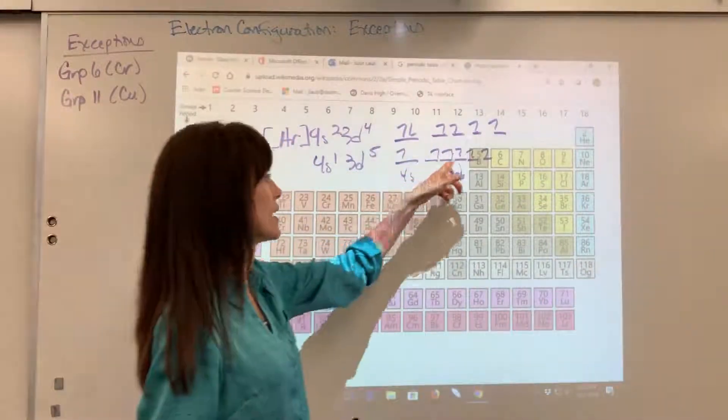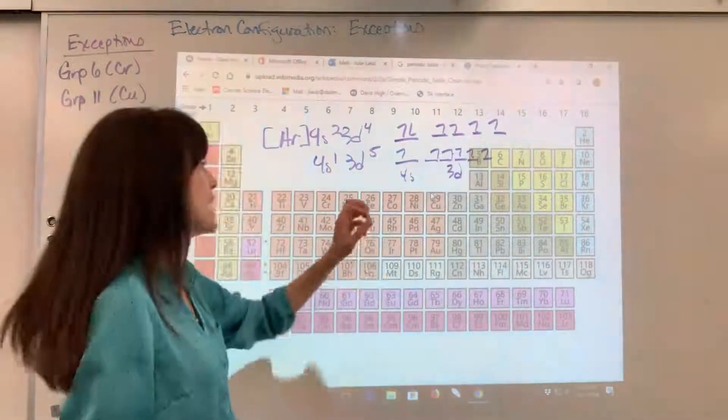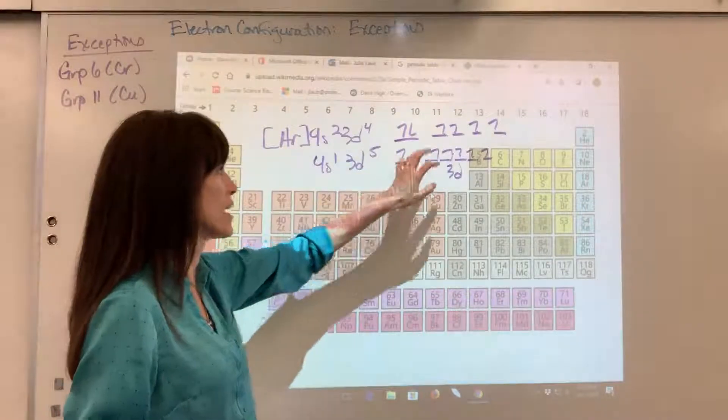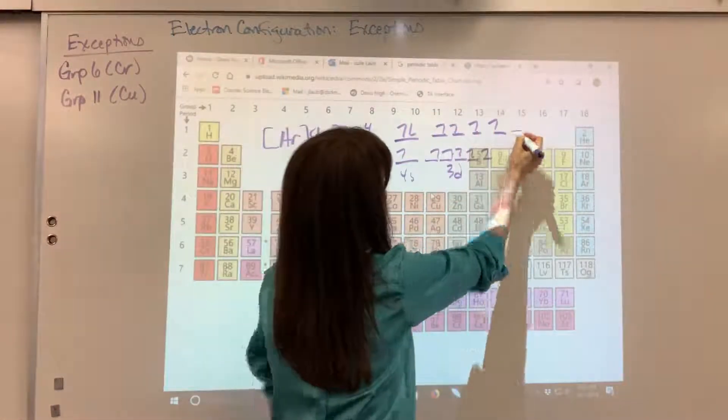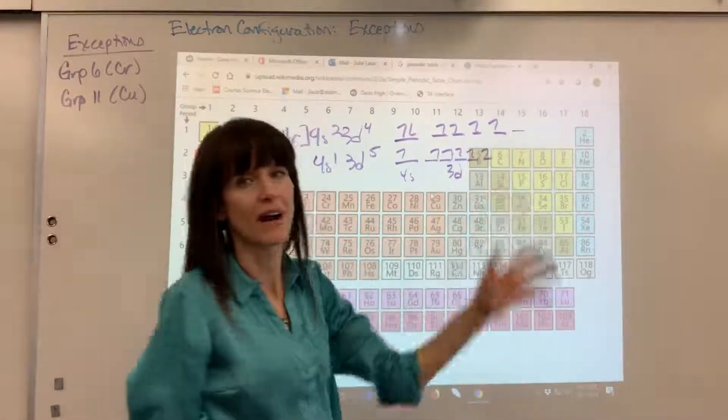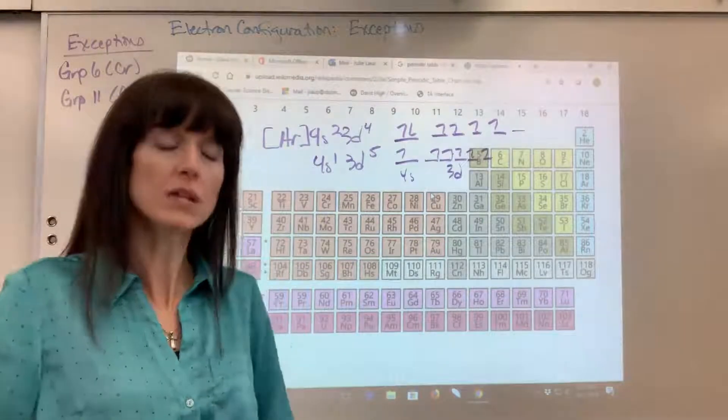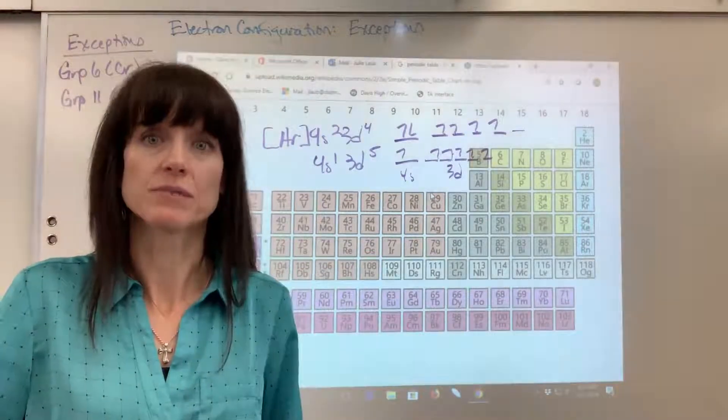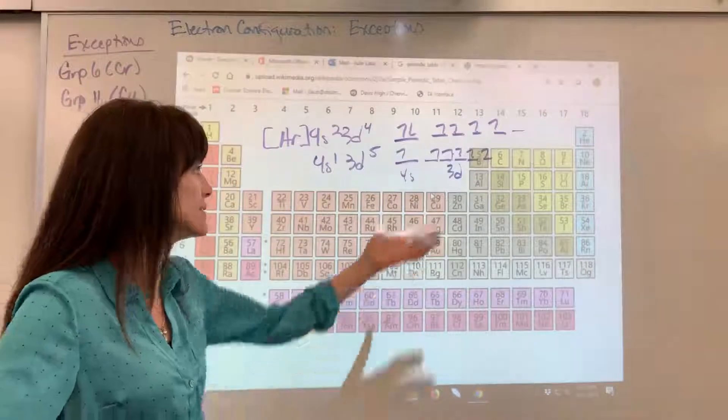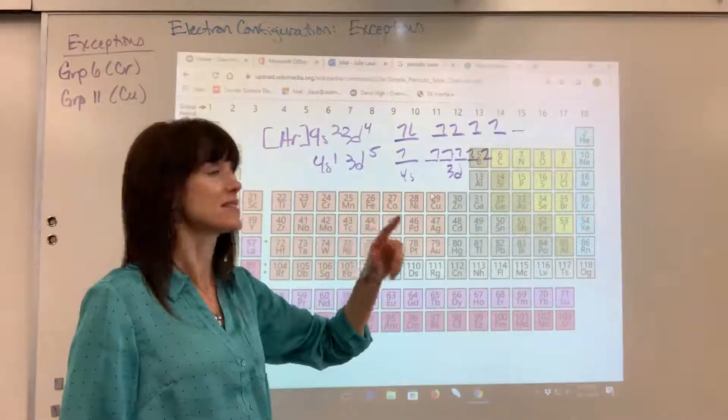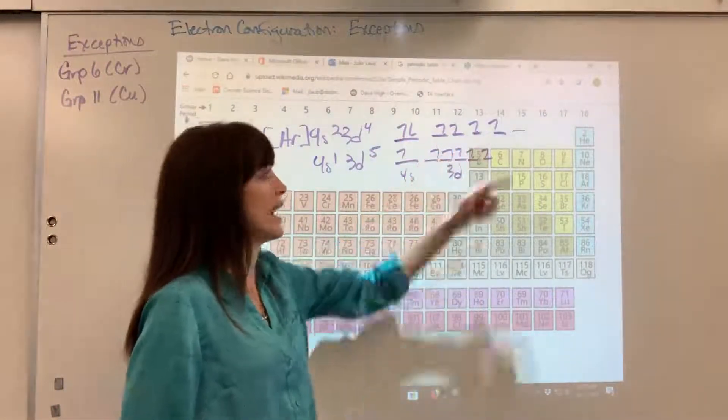It's more stable to have one electron in each of those than to have a full S block and only have 4 of the 5 orbitals filled. So it's stability that drives this. It's more stable to have a half-filled D and a half-filled S than a full S and a half-filled D.